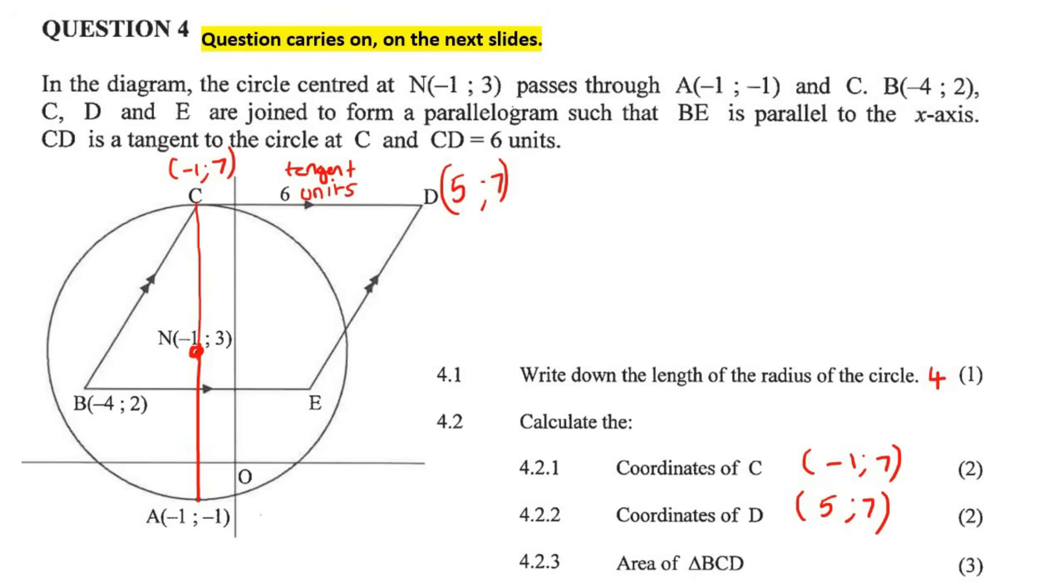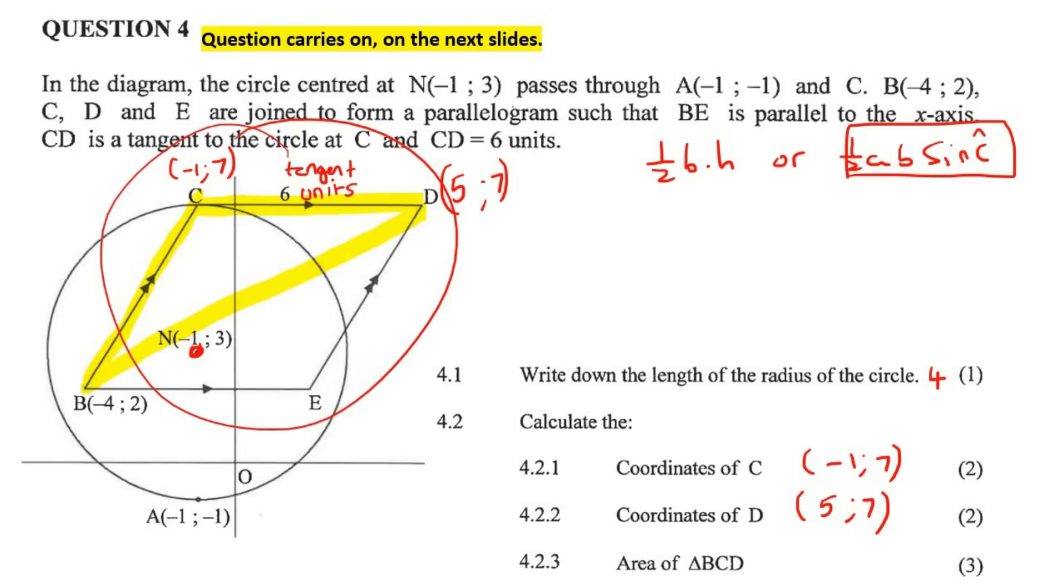And then they want you to now find the area of triangle B, C, D. Now remember, to find the area of a triangle, we know that it's either going to be half base times height, or half a, b, sin c. We only rarely use this one if we have angles that we're busy with here. But there's not really any angles. And this mark allocation would probably be a bit higher if we still had to go work out some angles now. So I'm going to scrap that one. I don't think it's going to be that one.